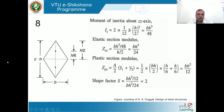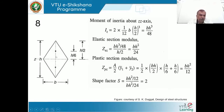With B as the horizontal diagonal, the rhombus consists of a top triangle and a bottom triangle. The centroid of the top triangle is at one-third of its own height from the base, which is one-third of H/2, giving H/6. Similarly, the centroid of the bottom triangle is also at H/6 from the neutral axis.